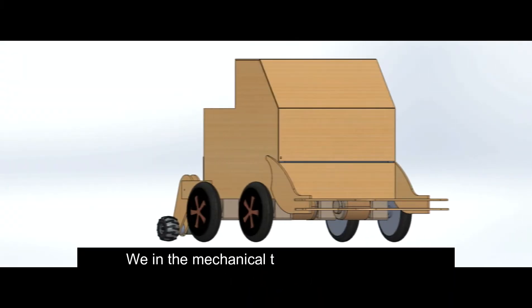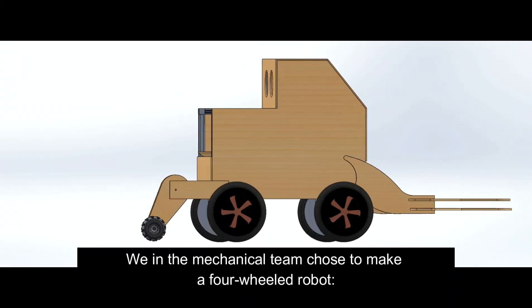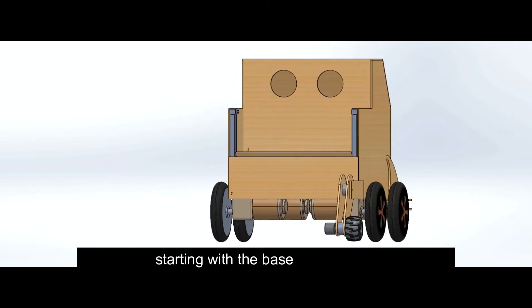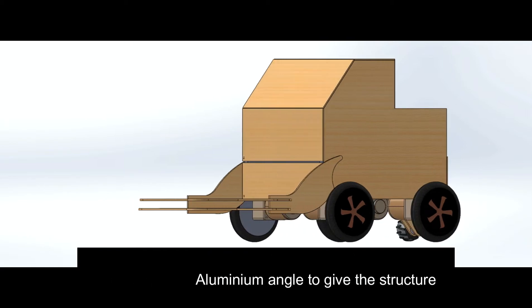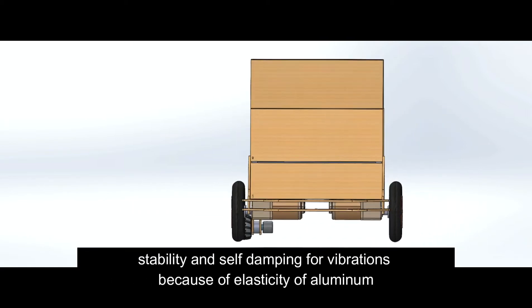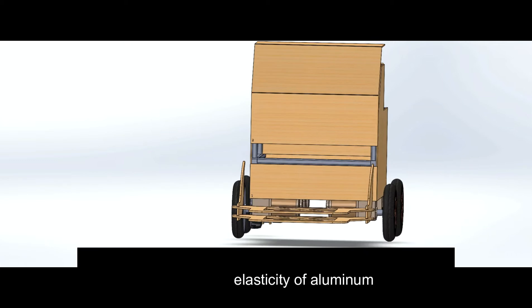We, in the mechanical team, chose to make a four-wheeled robot. Starting with the base, we made it from L-shaped aluminum angle to give the structure stability and self-damping for vibrations because of the elasticity of aluminum.